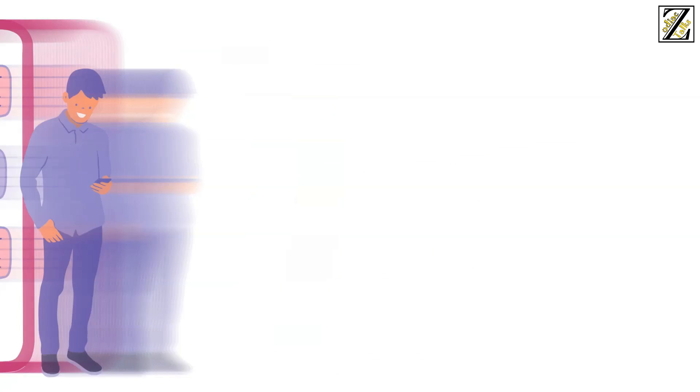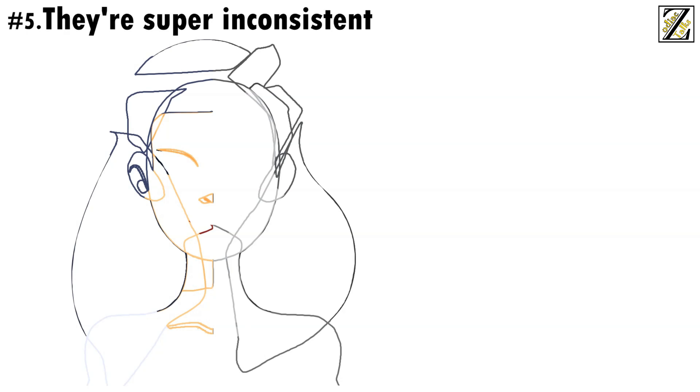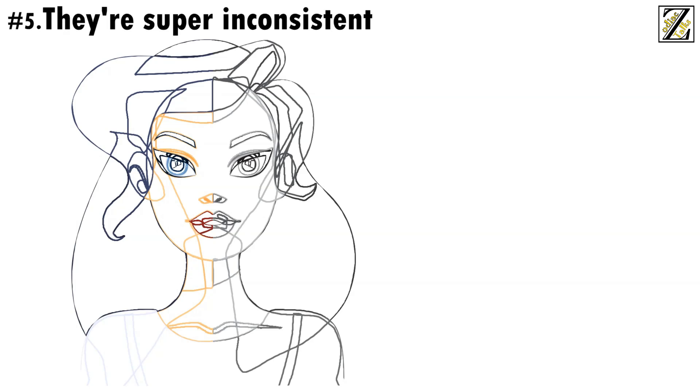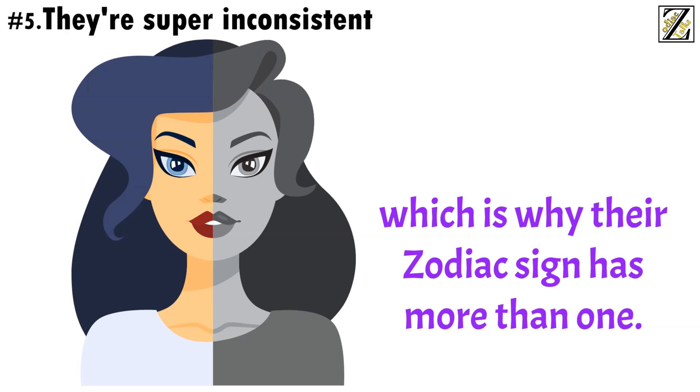Number 5, They're super inconsistent. One moment they want something, the next they want something else. One day they think something is amazing, the next they just can't stand it. Geminis are always changing their minds, which is why their zodiac sign has more than one.